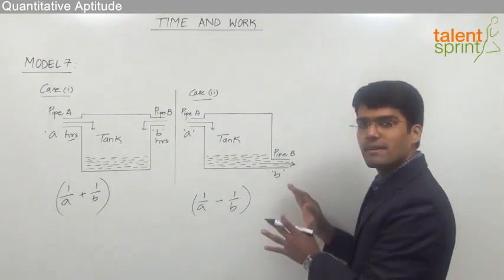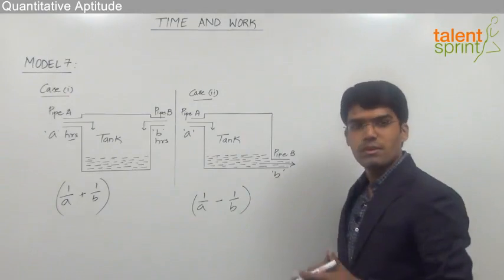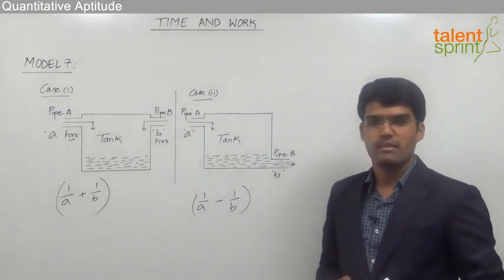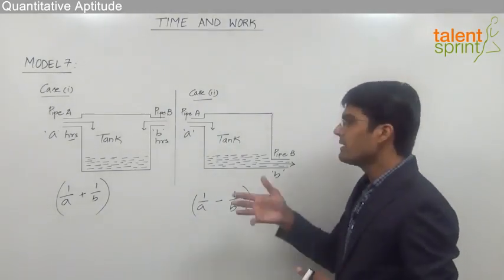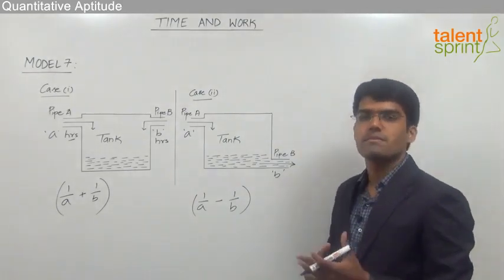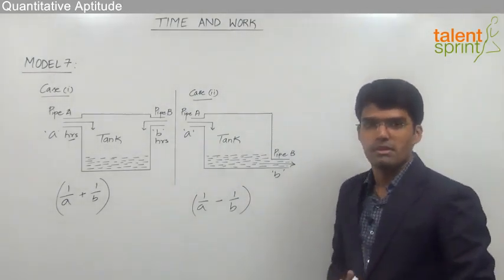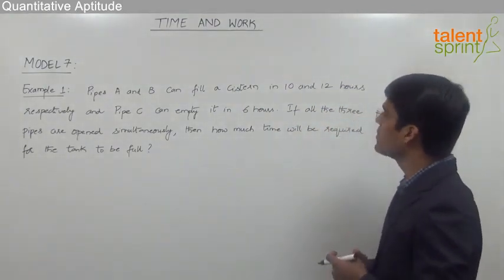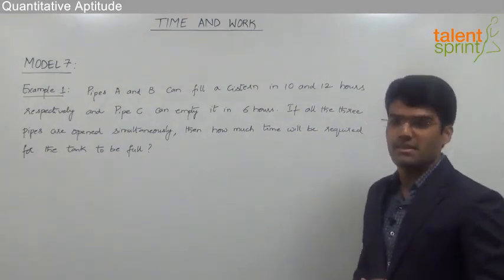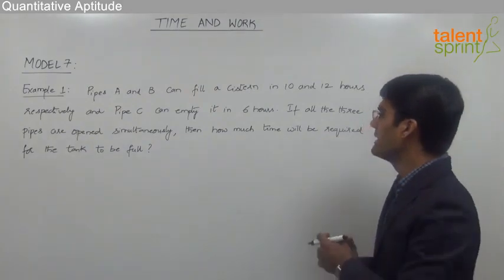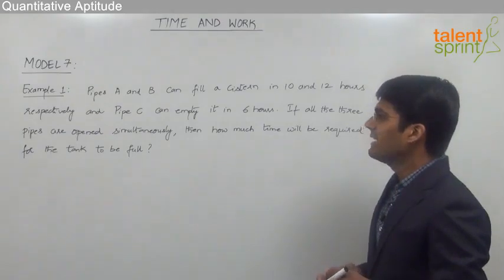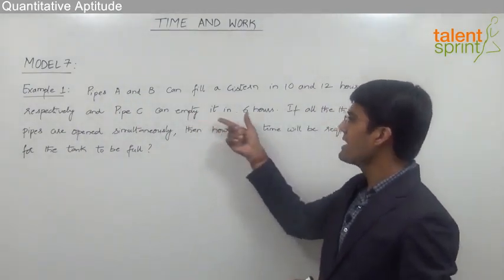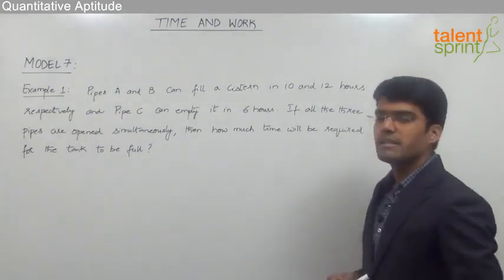This is the only special case different from time and work — otherwise all questions from this pipes and tanks model can be solved using the time and work concepts. We can also apply the concept of men × days here as pipes × time. Let us now look at the first example: pipes A and B can fill a cistern in 10 and 12 hours respectively, and pipe C can empty it in 6 hours. If all three pipes are opened simultaneously, how much time will be required for the tank to be full?